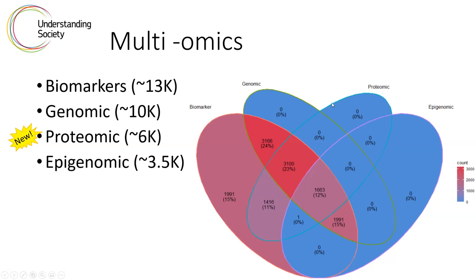This is a heat map — the redder the zone, the higher the number. For our new proteomics data, around 4,700 have genomic data as well. You can see the numbers that overlap there. One interesting thing to bear in mind is that for each person, the measures of all of these things come from the same blood collection. Everything except genomics will vary depending on the point at which the sample is taken, so it's useful to know these were all collected in the same blood collection.